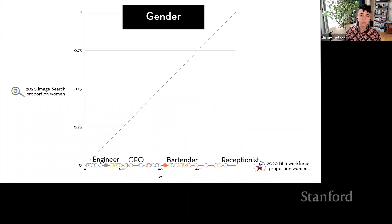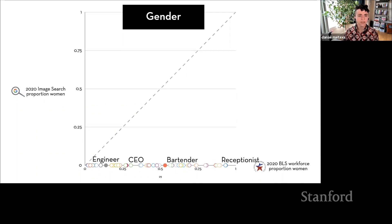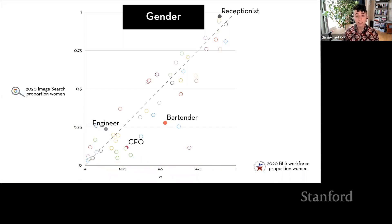Beginning with gender, I had occupations with their real-world workforce gender diversity on the x-axis, mapped to the proportion of women in image search results on the y-axis. The diagonal line represents perfect correspondence — above it, search results overrepresent women; below, they underrepresent. For example, receptionists are about 88% women, but Google images were almost 100% women. On the other hand, women are 30% of CEOs but only 11% of search results. And women are more than half of all bartenders, but only a quarter of search results.